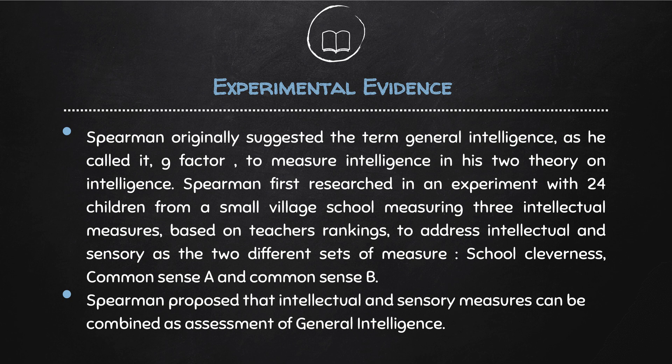Regarding experimental evidence, Spearman originally suggested the term general intelligence, which he called the g-factor, to measure intelligence in his two-factor theory. Spearman first researched in an experiment with 24 children from a small village school, measuring three intellectual measures based on teachers' rankings, to address intellectual and sensory as two different sets of measures: school cleverness, common sense A, and common sense B. Spearman proposed that intellectual and sensory measures can be combined as an assessment of general intelligence.